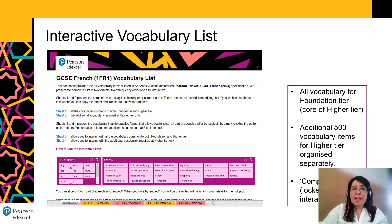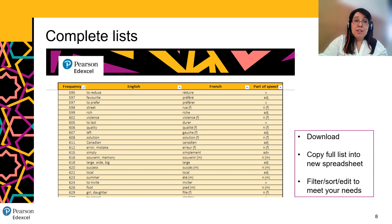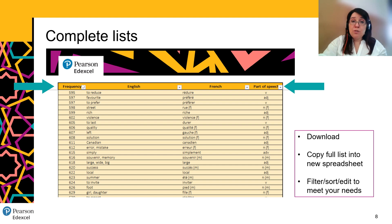We have now published our interactive vocabulary list to help you review the content of the new qualification. On this list you will find all the vocabulary for the foundation tier listed on one sheet, which is also the core of the higher tier. Then on another sheet, the additional 500 vocabulary items for the higher tier, organised separately. These sheets are locked, but you can simply download them, copy the full list into a new spreadsheet, and then do whatever you want in terms of filtering and editing. You might want to look at the frequency numbers, or consider parts of speech — whatever you want to do to organise vocabulary for you and your students.